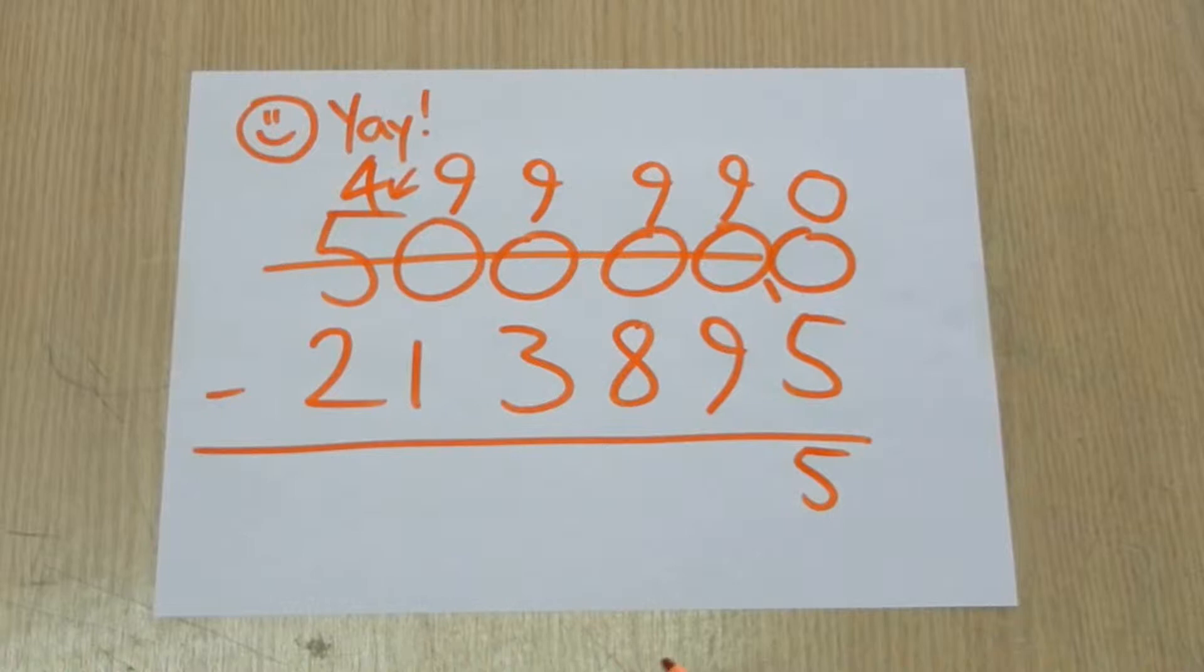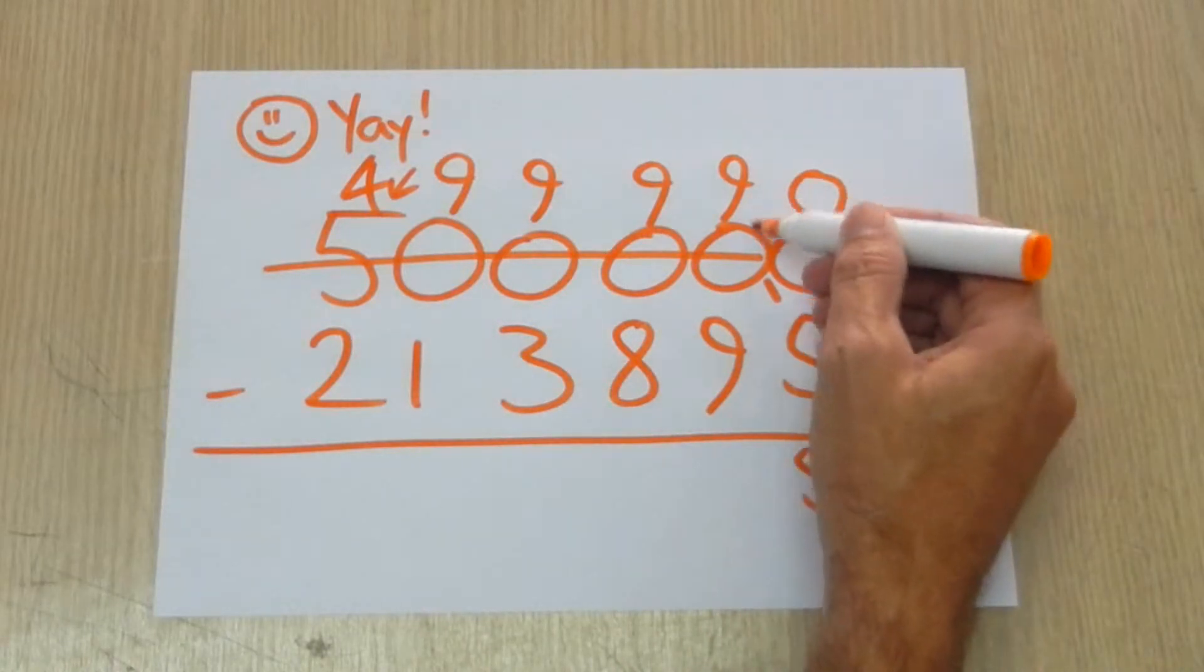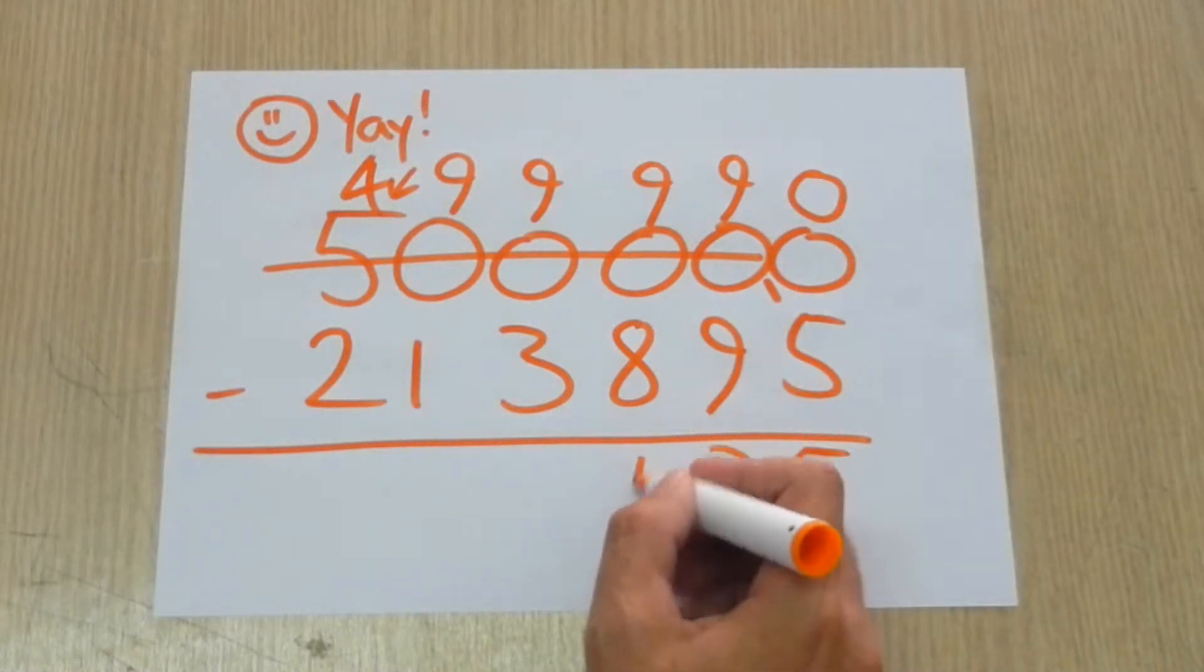And that's how you figure out how to subtract big numbers with lots of zeros. It seems easy, hard, but how easy.